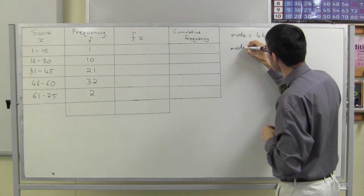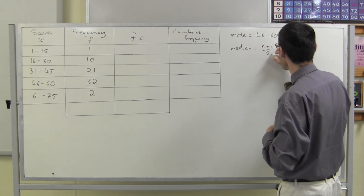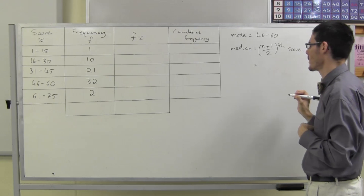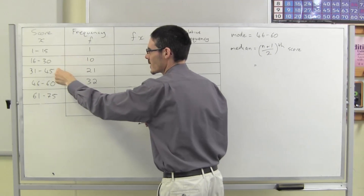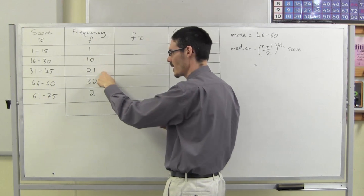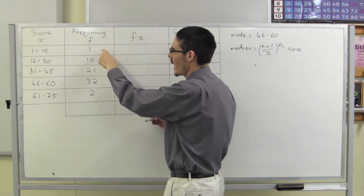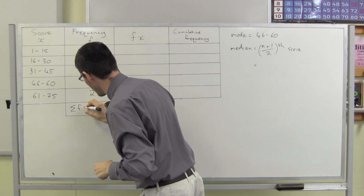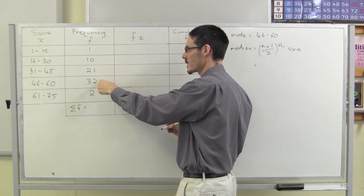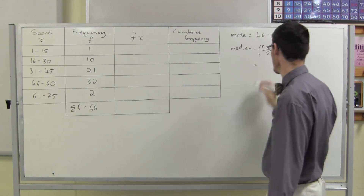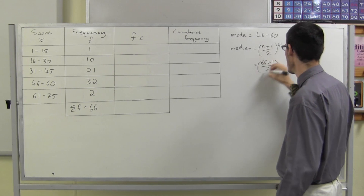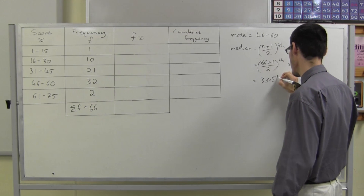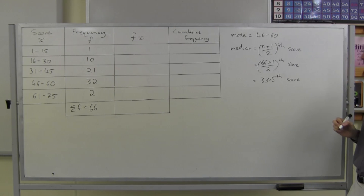The median is the (n+1)/2 th score — find the middle. How many scores have I got? Well, it's not 1, 2, 3, 4, 5, because there's 10 of those and 21 of those and 32 of those. So I actually have to add up the frequencies to find out how many scores I've got. The sum of the frequencies: 1, 11, 32, 64, 66. So 66 plus 1 divided by 2 tells me the position of the median — that's the 33.5th score.